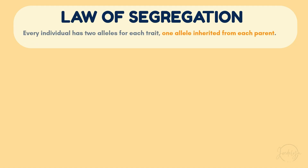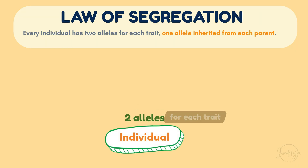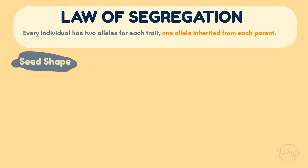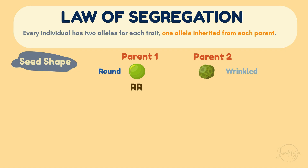The law of segregation states that every individual has two alleles for each trait, one allele inherited from each parent. For example, in the seed shape of a pea plant, one parent might pass on a round seed allele while the other passes on a wrinkled seed allele.